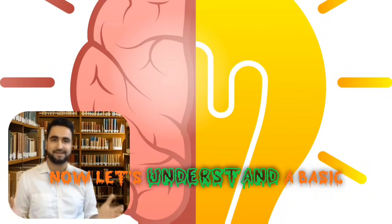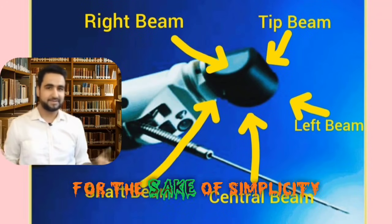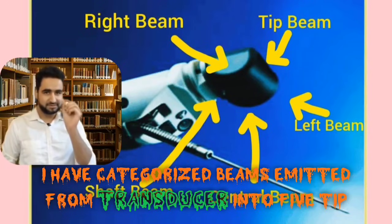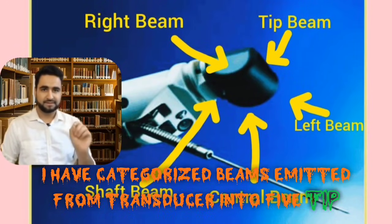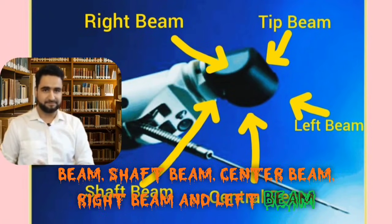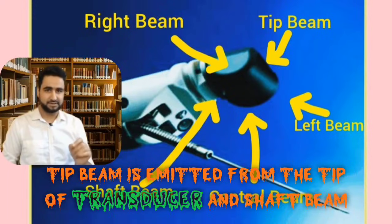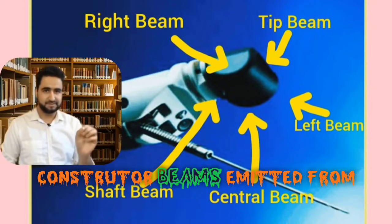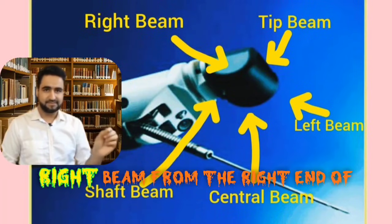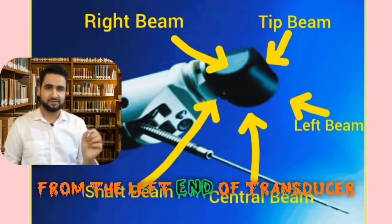Now let's understand a basic concept in endoscopic ultrasound. For simplicity, I have categorized the beams emitted from the transducer into five groups: tip beam, shaft beam, central beam, right beam, and left beam. The tip beam is emitted from the tip of the transducer, the shaft beam from the shaft end, the central beam from the center, the right beam from the right end, and the left beam from the left end.